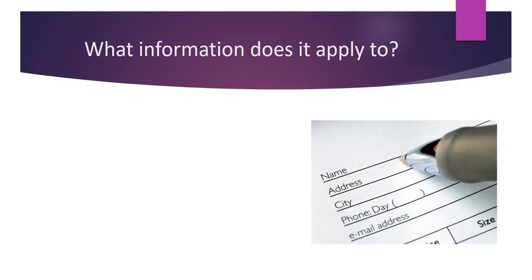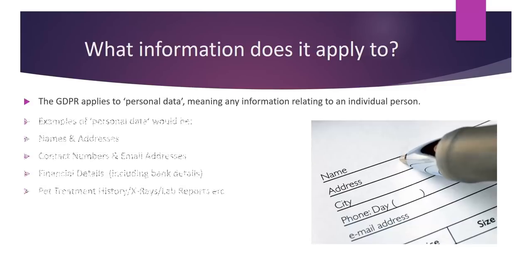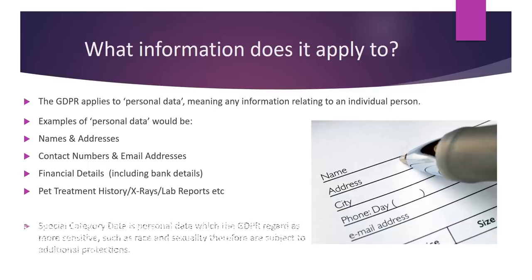The GDPR applies to personal data, meaning any information relating to an individual person. Examples of personal data are listed below. The GDPR also regards some personal data as more sensitive, which is called special category data.